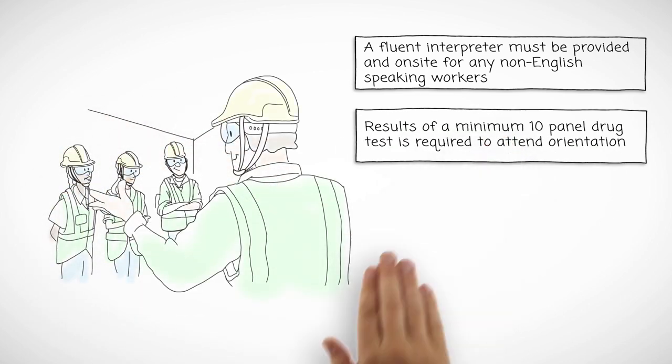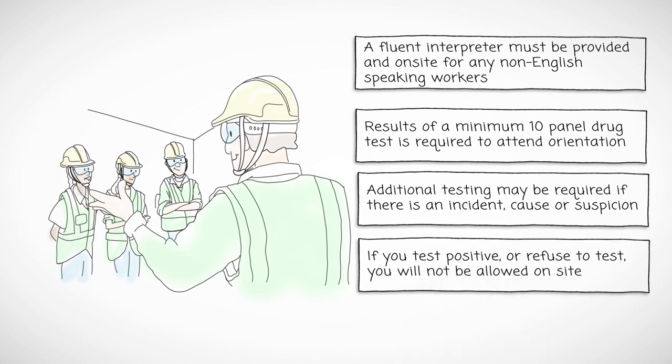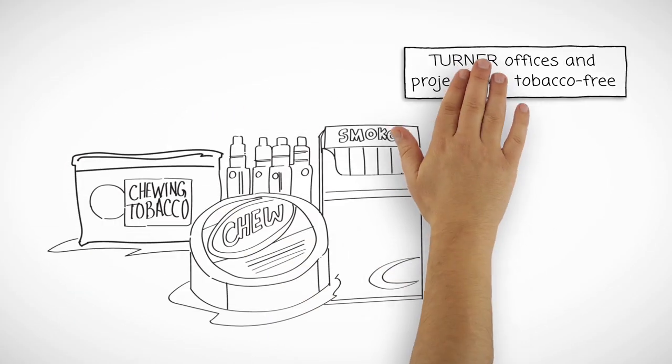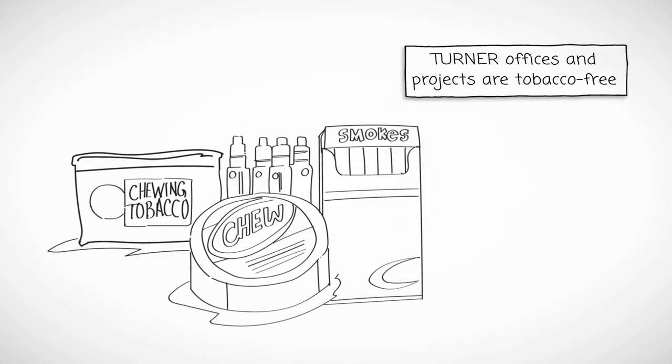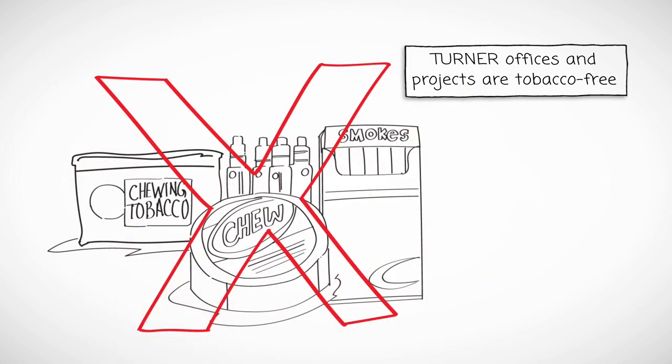A fluent interpreter must be provided and on site for any crew that has one or more non-English speaking workers. Results of a minimum 10-panel drug test current within the last year is required to attend orientation. Additional testing may also be required if there is an incident, cause, or suspicion. If you test positive or refuse to test, you will not be allowed on site. Turner offices and projects are tobacco-free. This includes e-cigs, vaping, and all forms of tobacco. Turner may elect to establish a tobacco zone outside the project.